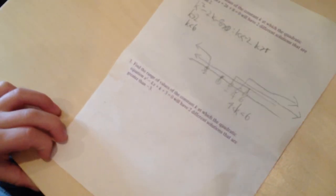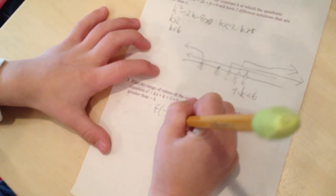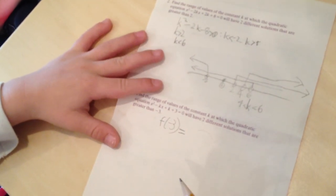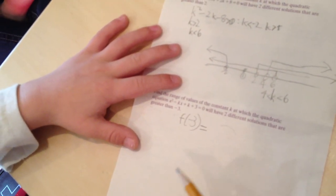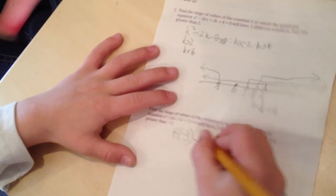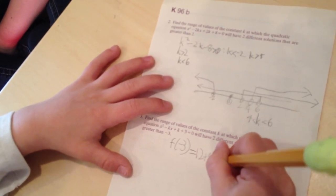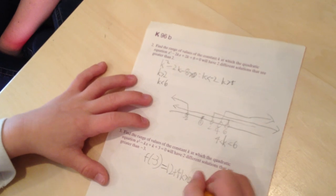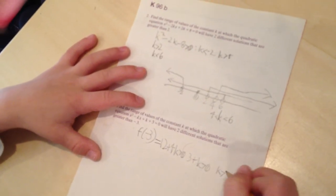Well, first we know f of negative 3 equals, when x equals negative 3, y equals 9 plus 3k plus k plus 3, which is 12 plus 4k, which is greater than 0. And then we could take out 4 from both sides. That means that 3 plus k is greater than 0. That means that k is greater than negative 3.